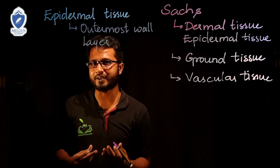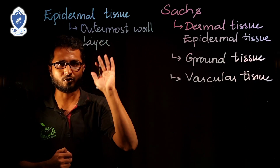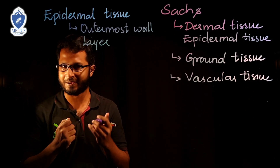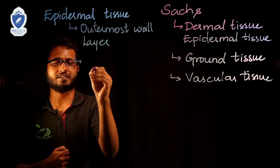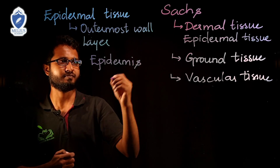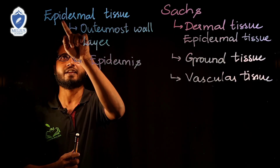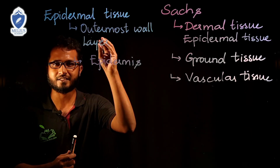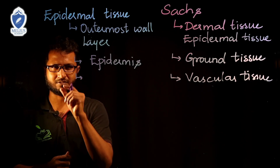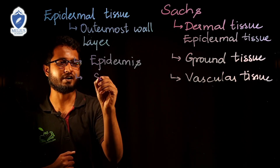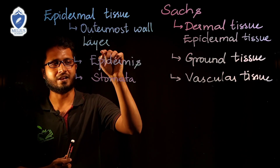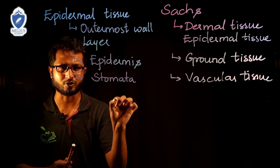Epidermal tissue is the outermost tissue of the plant. If we analyze the outermost tissue of a plant under a microscope, we find the outermost layer is known as epidermis. Apart from epidermis, we also have minute pores present on the epidermis. Those pores are called stomata.